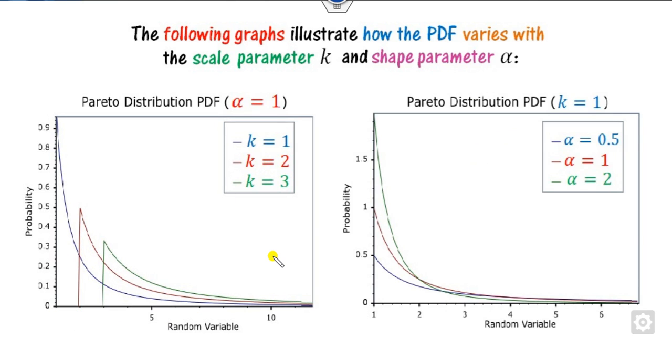Similarly, the impact of the parameter alpha you can see is 0.5, 1 and 2. Why is alpha called the tail parameter? You can see it looks like a tail of the distribution.